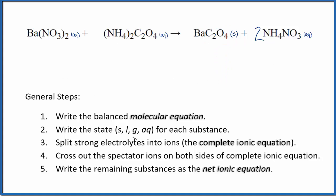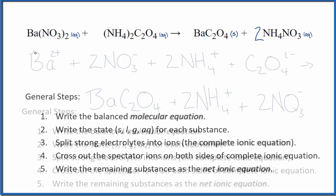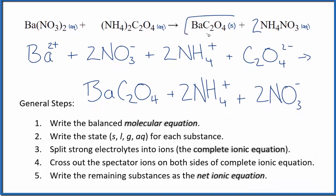Now we can split the strong electrolytes into ions for the complete ionic equation. And that looks like this. Note that we don't split solids apart when we do our net ionic equation, so we kept this barium oxalate together.